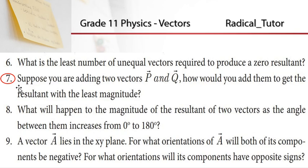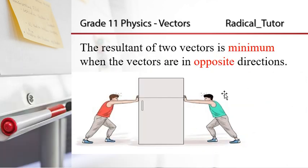Question number 7: Suppose you are adding two vectors P and Q. How would you add them to get the resultant with the least magnitude? So for vectors P and Q, the resultant R ranges based on P and Q, so the least R range — the resultant of two vectors is minimum when the